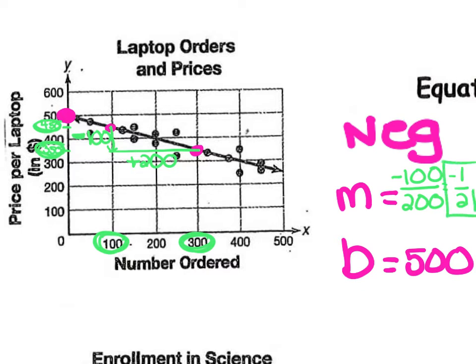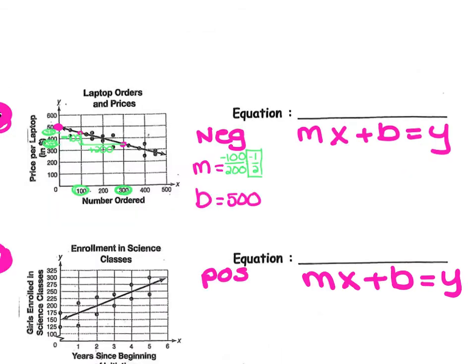And this is our slope. Now, write an equation for the line. When you're ready, move on to the next. For number 5, you should have gotten negative 1 half times x plus 500 equals y.